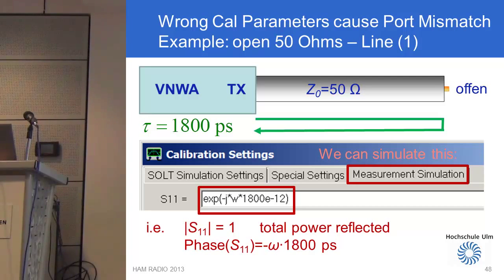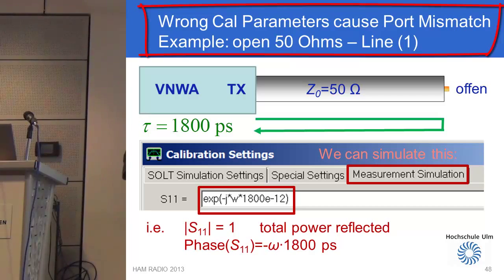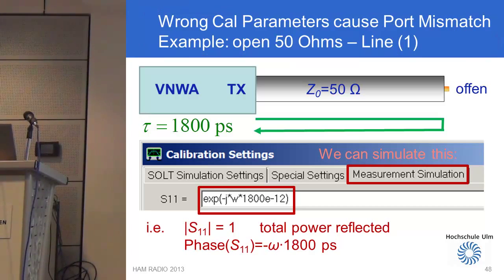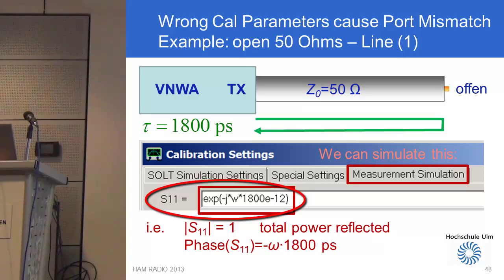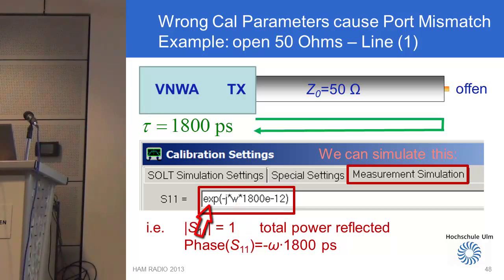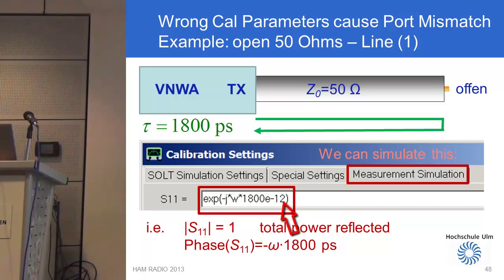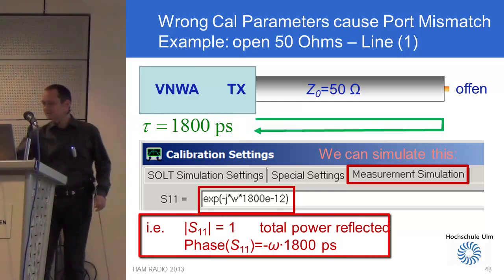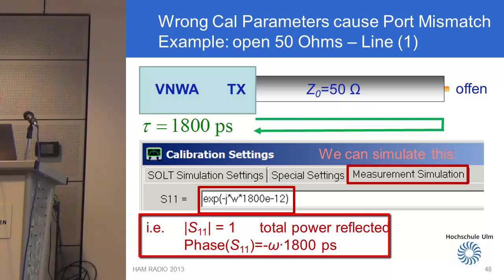Next, I will demonstrate what happens if you do not know the parameters for the calibration standards or have entered wrong data — this can be simulated in the VNWA software. In the latest versions there is a field in the calibration settings where you can enter an expression for simulation of a measurement. In this case we have entered a mathematical definition of a complex reflection factor. W is omega, 2 times pi times frequency, and the exp expression declares it as exponential: e to the power of minus j times omega times 1800 times 10 to the minus 12, where the latter factor corresponds to 1800 picoseconds delay.